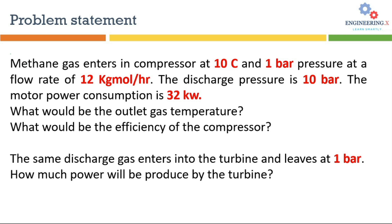Now we will practice these concepts in HYSYS by solving this problem. Methane gas enters a compressor at 10°C and 1 bar pressure at a flow rate of 12 kg-mol per hour. The discharge pressure is 10 bar and the motor power consumption is 32 kilowatts. We need to find the gas outlet temperature, the adiabatic efficiency, and the polytropic efficiency of the compressor. After that, we will feed the same discharge gas into a turbine, leaving at 1 bar, and calculate how much power the turbine produces.